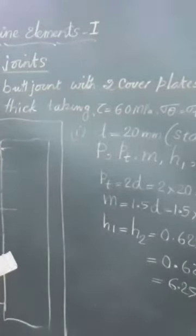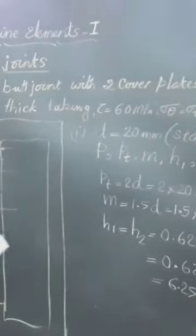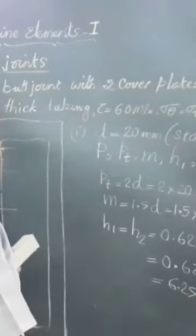So friends, we have found out the diameter of the rivet is 20 mm, the corresponding hole is 21 mm, the various parameters.